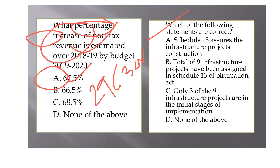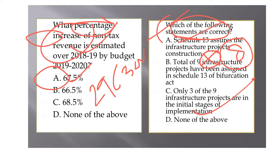The next question is about infrastructure projects. A total of 8 infrastructure projects are mentioned in Schedule 13 of the AP Reorganization Act 2014. As of now, only 3 projects are in the initial stages of implementation. The 5 non-implemented projects include the Dugarajapatnam Port, Integrated Steel Plant at Kadapa, Greenfield Crude Oil Refinery, new railway zones, and Metro Rail Facility at Vijayawada, Guntur, Tenali and Visakhapatnam. The 3 being implemented are the Vizag-Chennai Industrial Corridor, expansion of airports at Tirupati, Visakhapatnam and Vijayawada to international standards, and rapid rail and road connectivity from the new capital. The answer is option A.